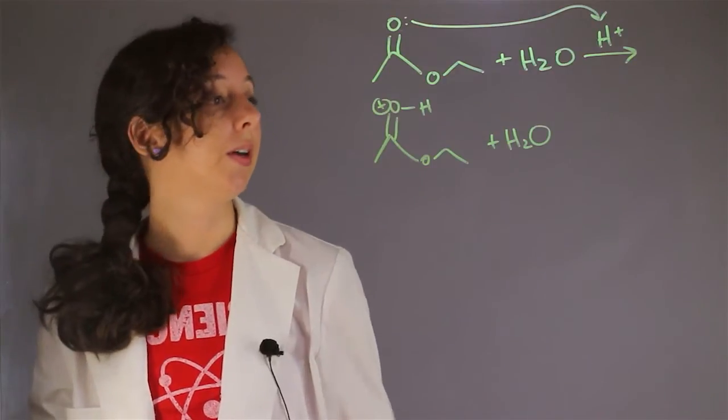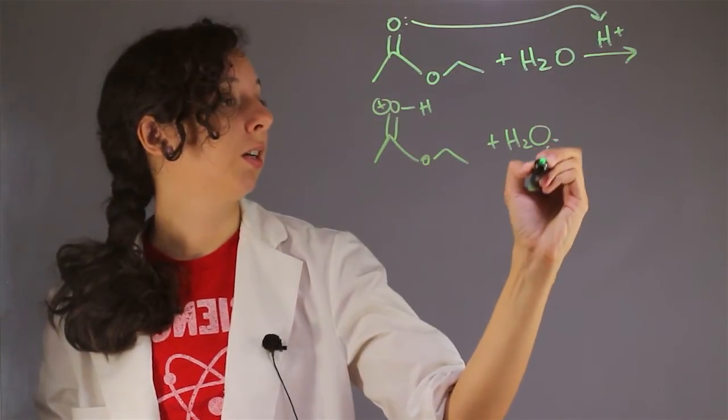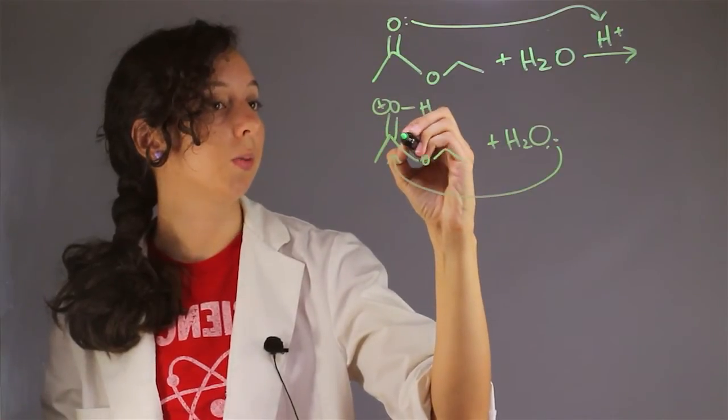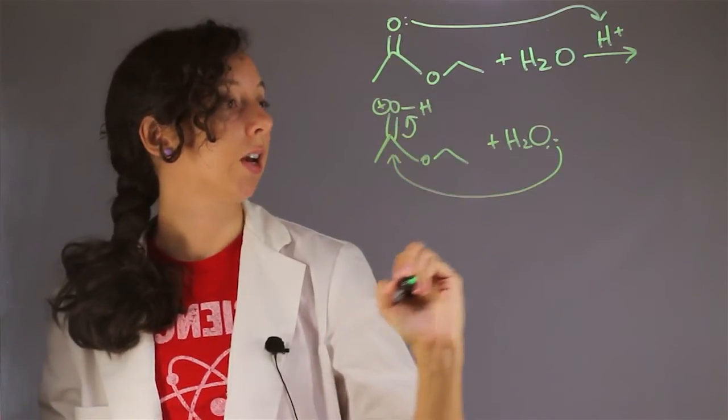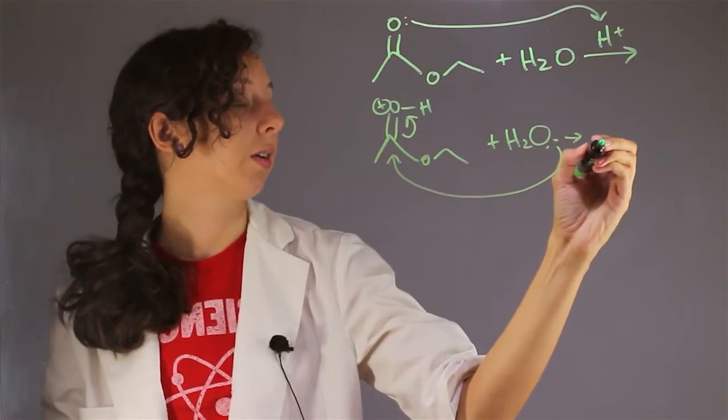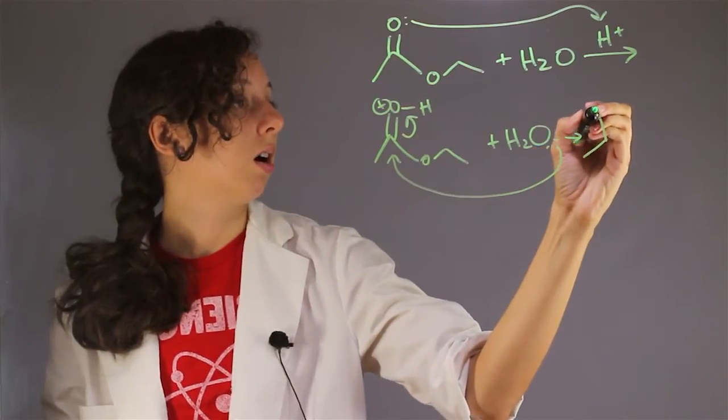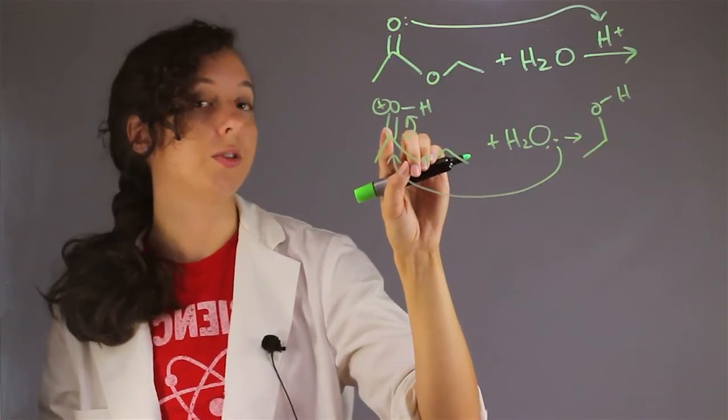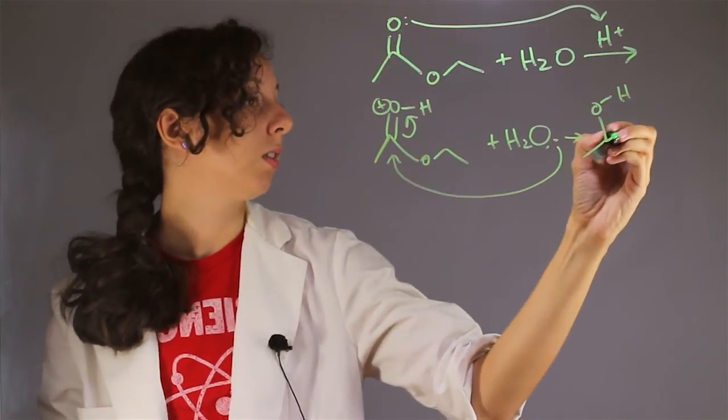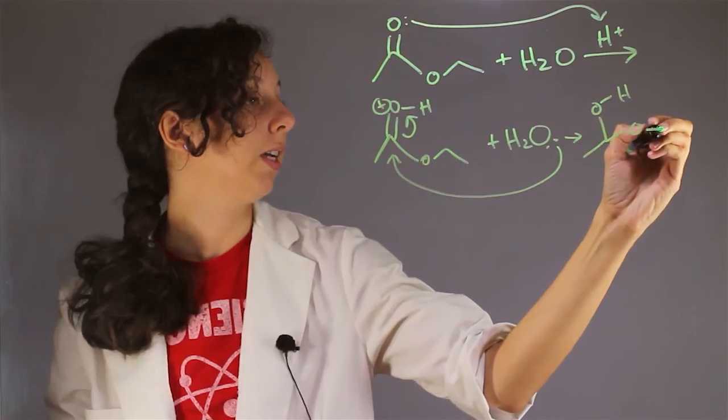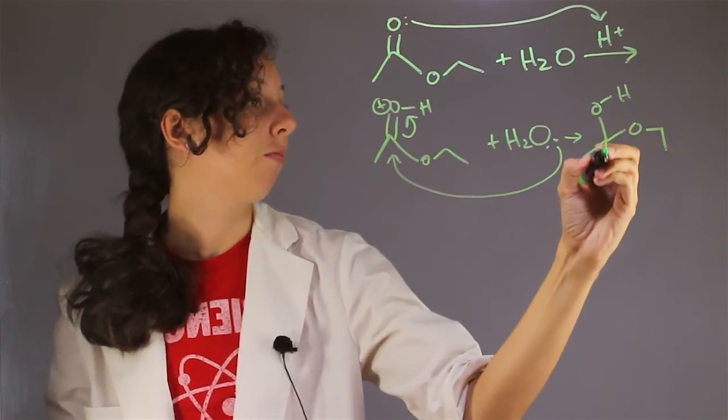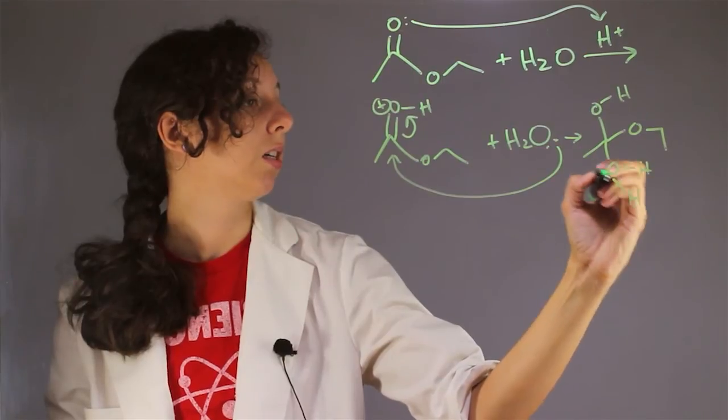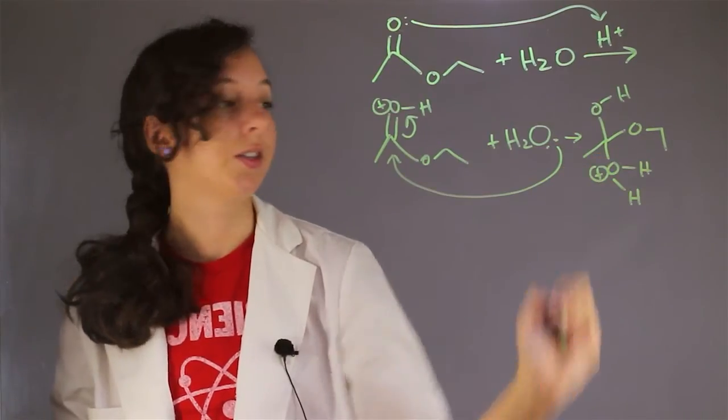So the second step, the lone pairs of oxygen come in and attack this carbonyl, forcing one of these bonds up. So our intermediate is going to have our alcohol group has now formed. This used to be the carbonyl. We still have our ester functionality. And now we also have positively charged water, which has added. So this is not very stable.